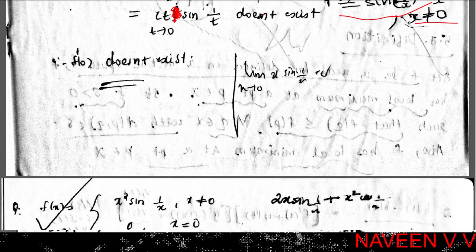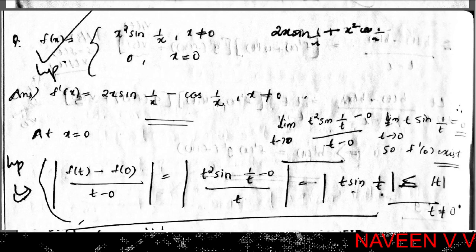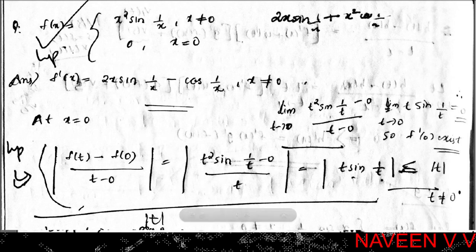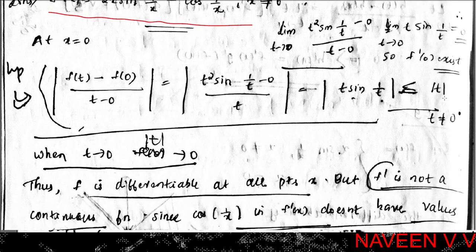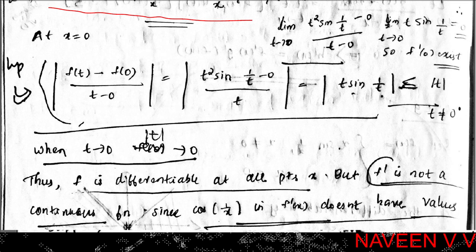Example 2: Let f(x) = x²·sin(1/x) if x ≠ 0, and f(0) = 0. For x ≠ 0, f'(x) = 2x·sin(1/x) - cos(1/x). At x = 0: |[f(t) - f(0)] / (t - 0)| = |t²·sin(1/t) / t| = |t·sin(1/t)| = |t|·|sin(1/t)| ≤ |t|, since |sin(1/t)| ≤ 1. As t→0, |t|→0, so by squeeze theorem limit t→0 of [f(t) - f(0)] / t = 0.